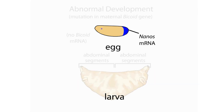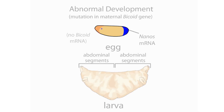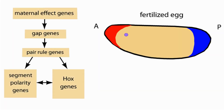For example, a larva develops abnormally if the mother fruit fly had a mutation in her bicoid gene. The larva develops abdominal segments at its anterior as well as posterior ends, lacking head and thoracic segments. The bicoid and nanos mRNAs were transcribed in the mother's cells. The genes encoding these mRNAs are called maternal effect genes. The maternal effect genes are the first in a series of genes that regulate early pattern formation in the Drosophila embryo.